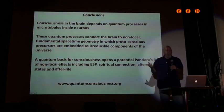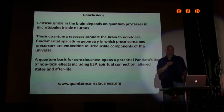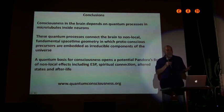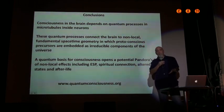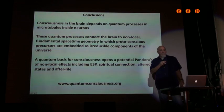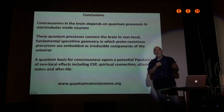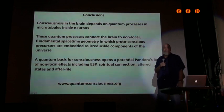To conclude, I think consciousness in the brain depends on quantum processes inside microtubules inside neurons and glia. These quantum processes connect the brain to some non-local fundamental space-time geometry, perhaps described through strings or loop quantum gravity, in which conscious precursors are embedded as irreducible components of the universe. In other words, consciousness isn't a higher order emergence from very complex things. It's something built into the universe, which gets accessed or liberated. This suggests opening a potential Pandora's box for science of non-local effects including ESP, spiritual connection, altered states, and even afterlife, which are discredited and not even discussed or taken seriously because they can't be true. Well maybe they are possible and now they'll have to be considered with more seriousness. Thank you for your attention, you've been a great audience.